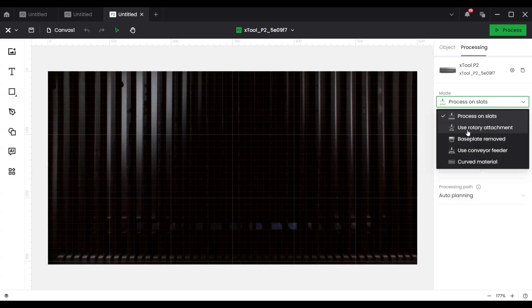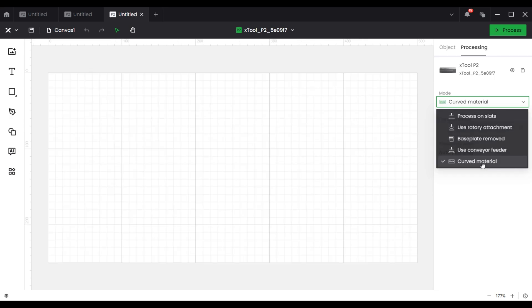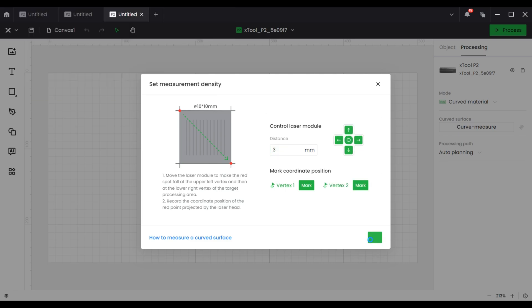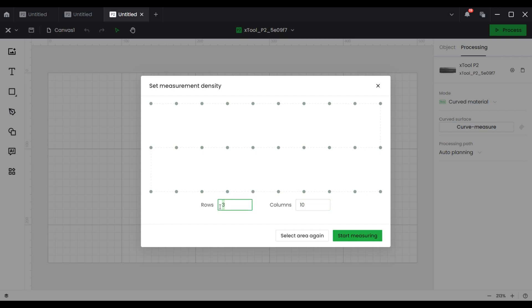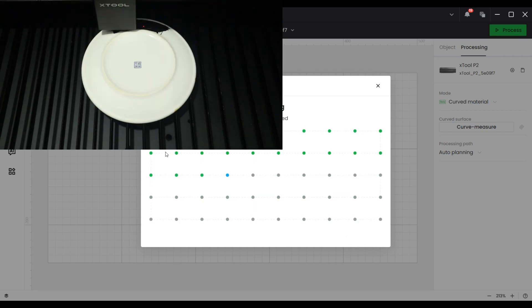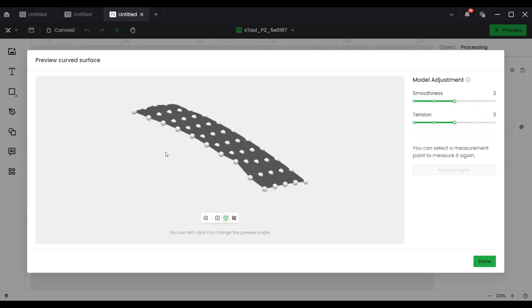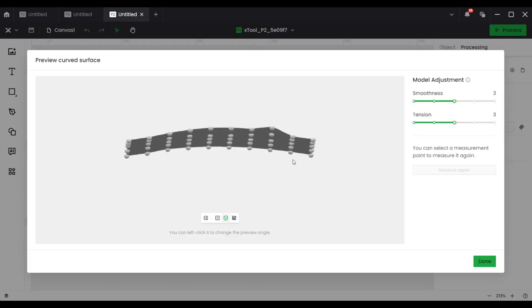First, select the curve material function in the software. Then, click on the curve measure button to set the area to be engraved, and control the movement of the laser module in the software to design the preset rectangle engraving area. Then click on the next button to start collecting the distance data of the surface within the engraving area to generate the 3D model and realize the dynamic focusing during the engraving process.